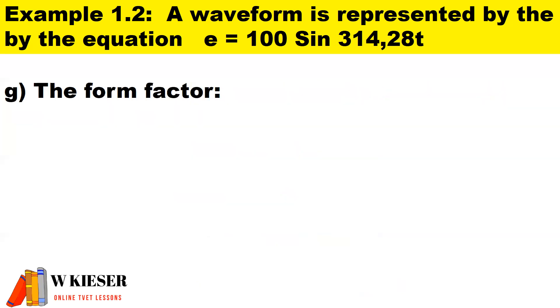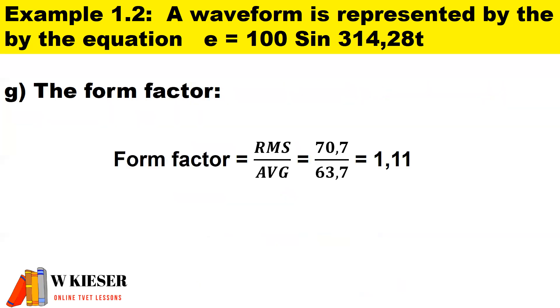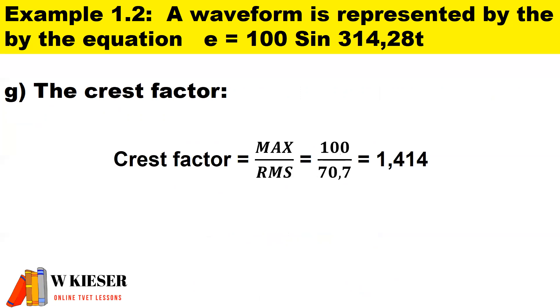The form factor is the ratio of RMS to average value. The crest factor is the ratio of the maximum value to the RMS value.